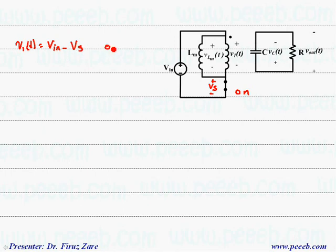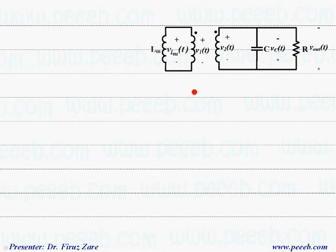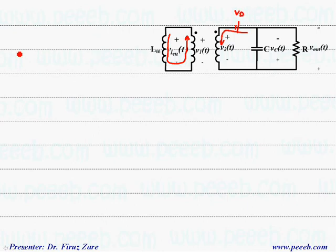This is for the time that the switch is on, and now we can see that this capacitor is discharged through the resistor. That means the current through the capacitor equals the load current, I_out, and because of direction, it is minus I_out. When the switch is off, we can see the current loop, and because of this polarity, this is the direction of current. There is a diode, and because the diode is not ideal, we have a voltage drop across the diode. So V2 equals minus Vd minus Vout.